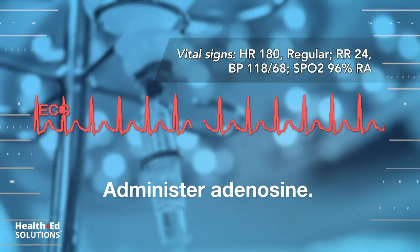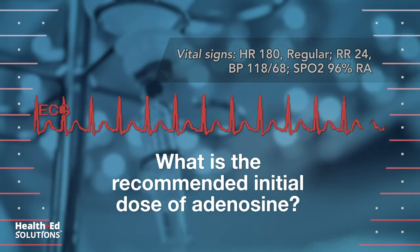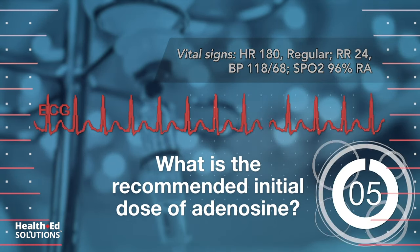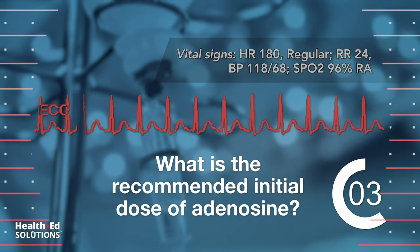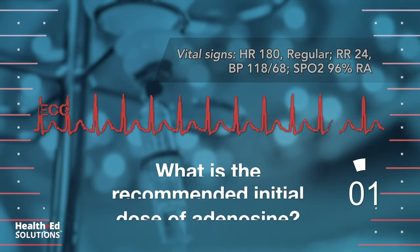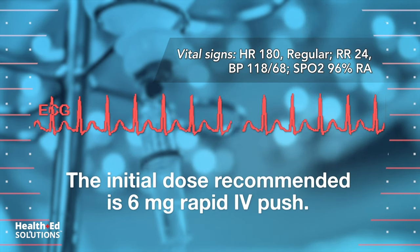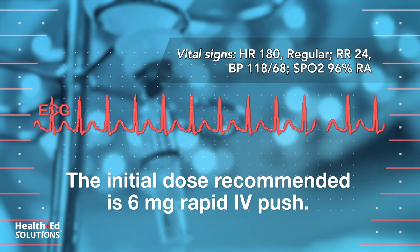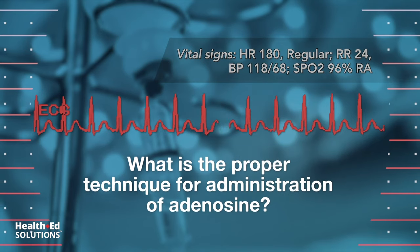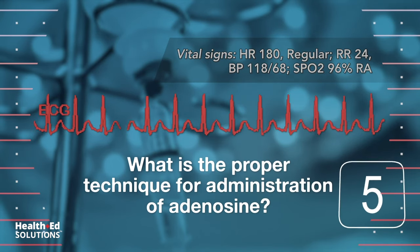Administer adenosine. The initial dose recommended is six milligrams rapid IV push. What is the proper technique for administration of adenosine?